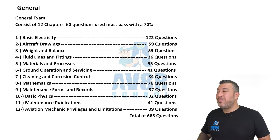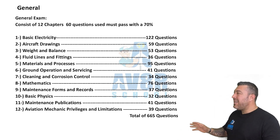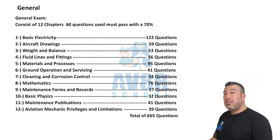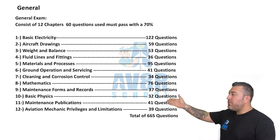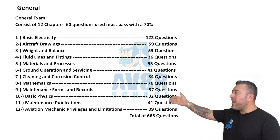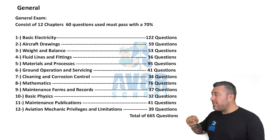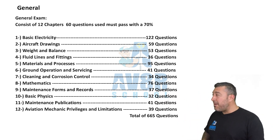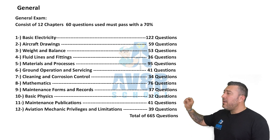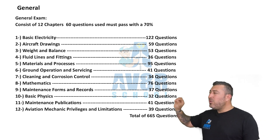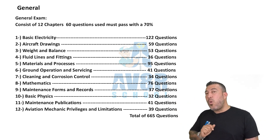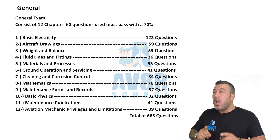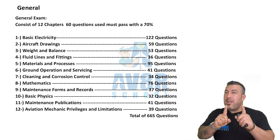All right, so now that we know what to do, let's get on with the General. As you can see here, we have General — 665 questions, a total of 12 different chapters as I described before. They're only going to take about 60 questions out of this pool of questions.